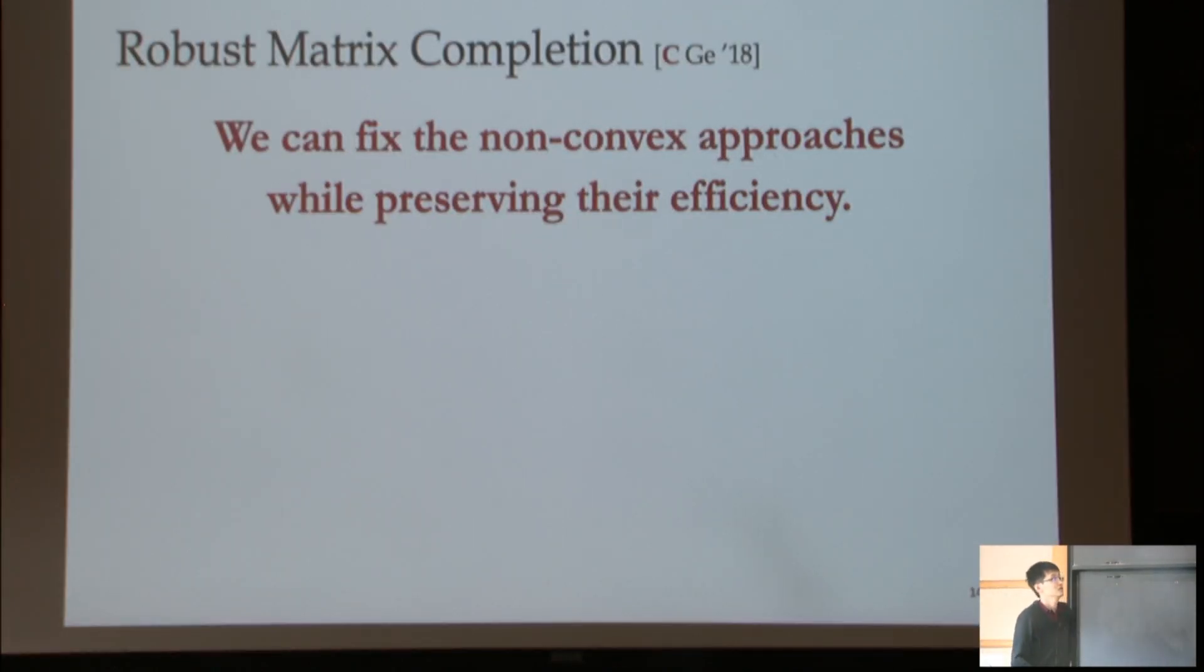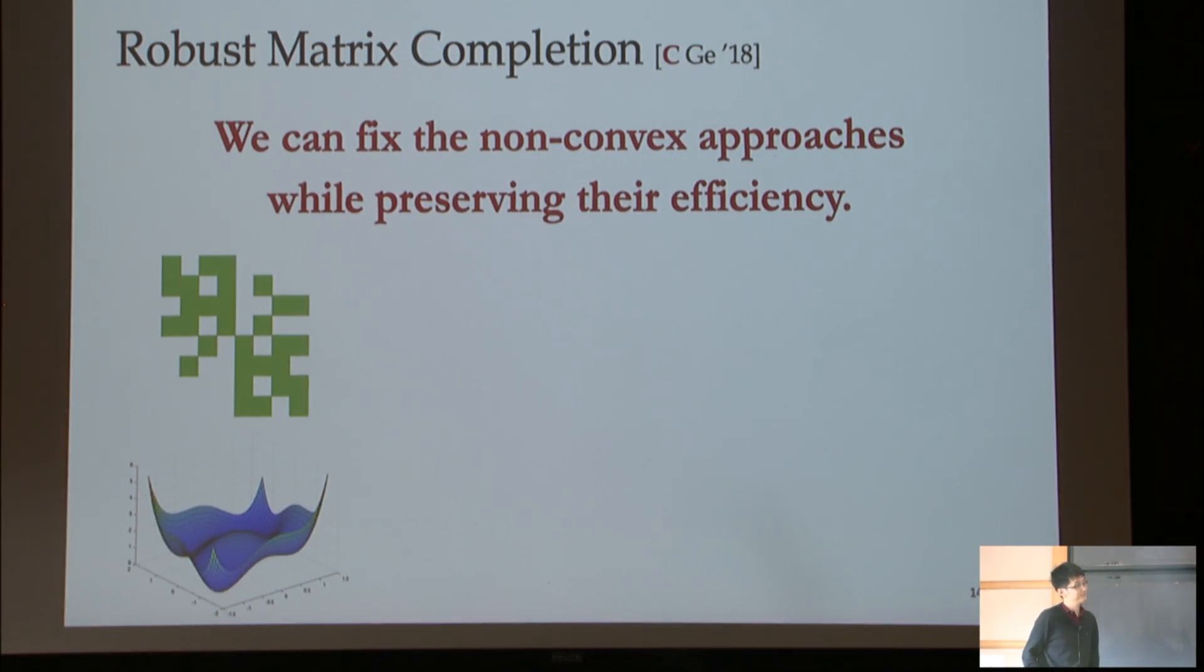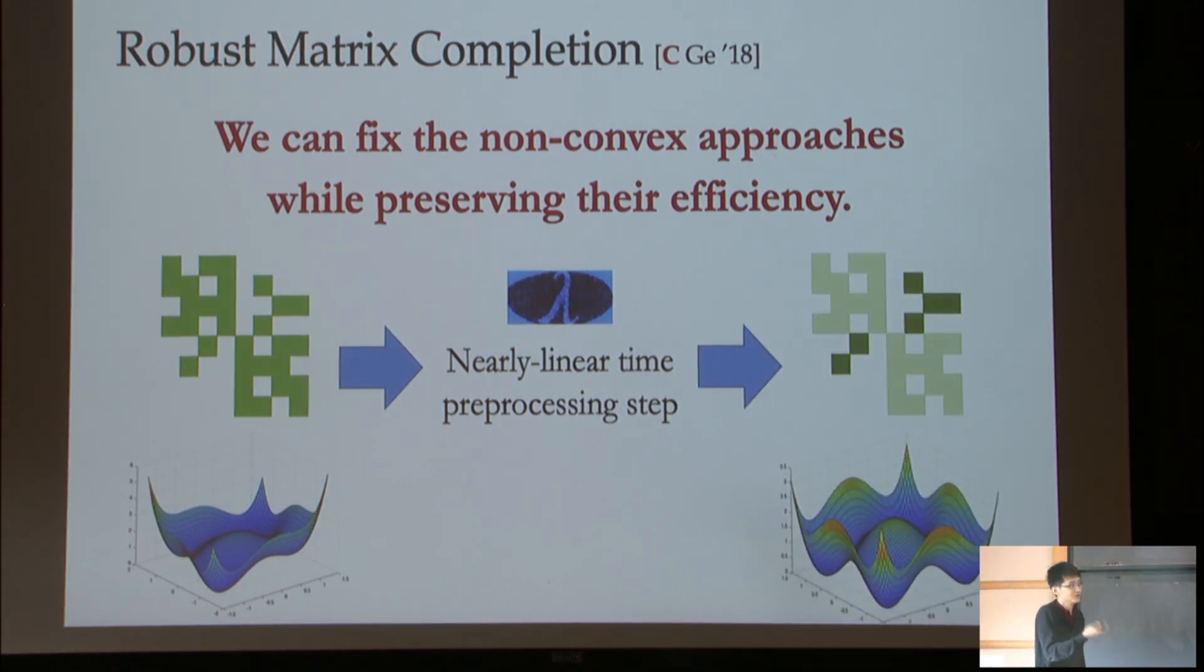Message two is that in light of this, we can actually fix these non-convex approaches while preserving their efficiency. So very roughly what we do is, when we see this input, we're actually gonna ignore all the matrix entry, the value of those entries that we observe. We just look at the pattern of observation. We're gonna feed it into pre-processing algorithm. And the pre-processing algorithm will output weighted version of these input that kind of counter the balance, counter the influence of the adversary. And if you write your algorithm on the weighted non-convex objective function, given by this pre-processing step, your objective function is going to become good again. So after this pre-processing step, all the local optima are gonna be approximately global optima. That's the first result that I'm gonna mention.